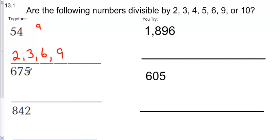So, 3. I gotta add them up. 6 plus 7 is 13, 13 and 5 is 18. I'm gonna write it right up here just so I remember. So it is divisible by 3. How about 5? It ends in a 5, so it's divisible by 5. How about 9? The sum of the digits is a multiple of 9, so it's also divisible by 9.